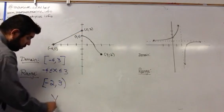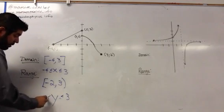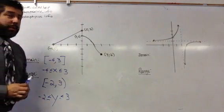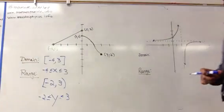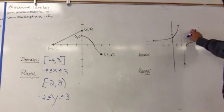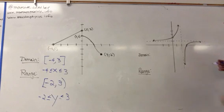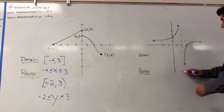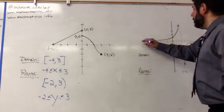We can write this as y is less than 3 or greater than or equal to negative 2, if I wanted to write the range that way. Over here we have a rational function. For our rational function, we notice we have asymptotes at x equals 2 and y equals 1.